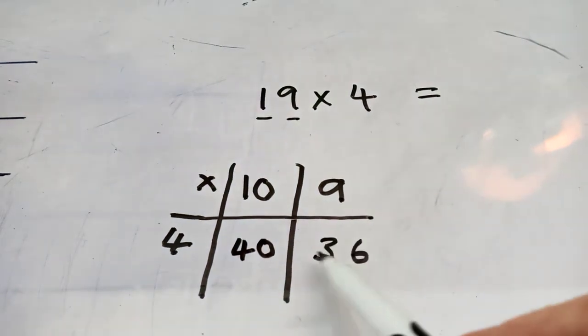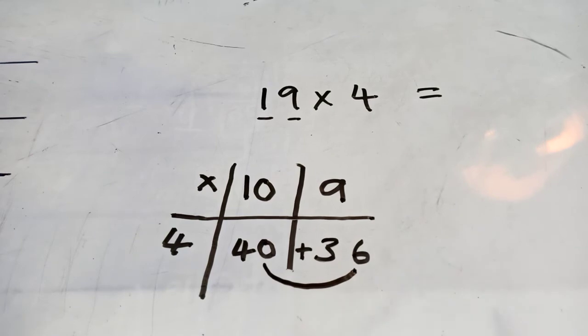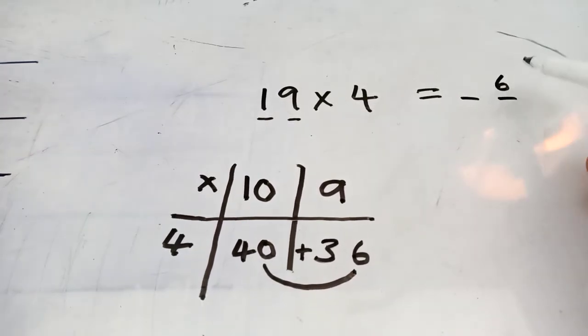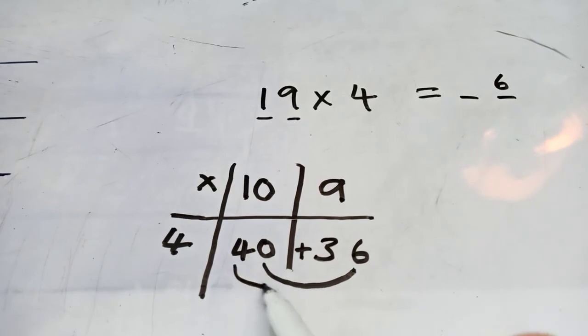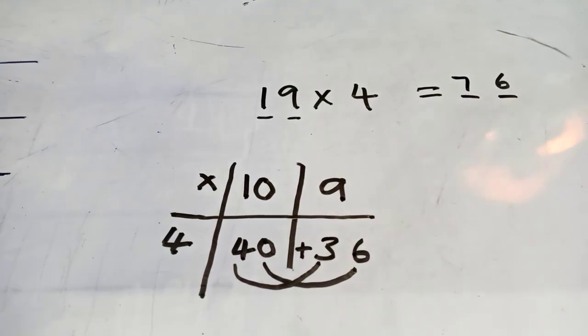Right, I've now got to add them together. What is 40 and 36? I think I could do this sideways. I don't think there is an exchange. So, what's 0 ones add 6 ones? Well done. It's 6 ones. And what's 4 tens add 3 tens? Well done, 7 tens. OK, we'll do one more for luck.